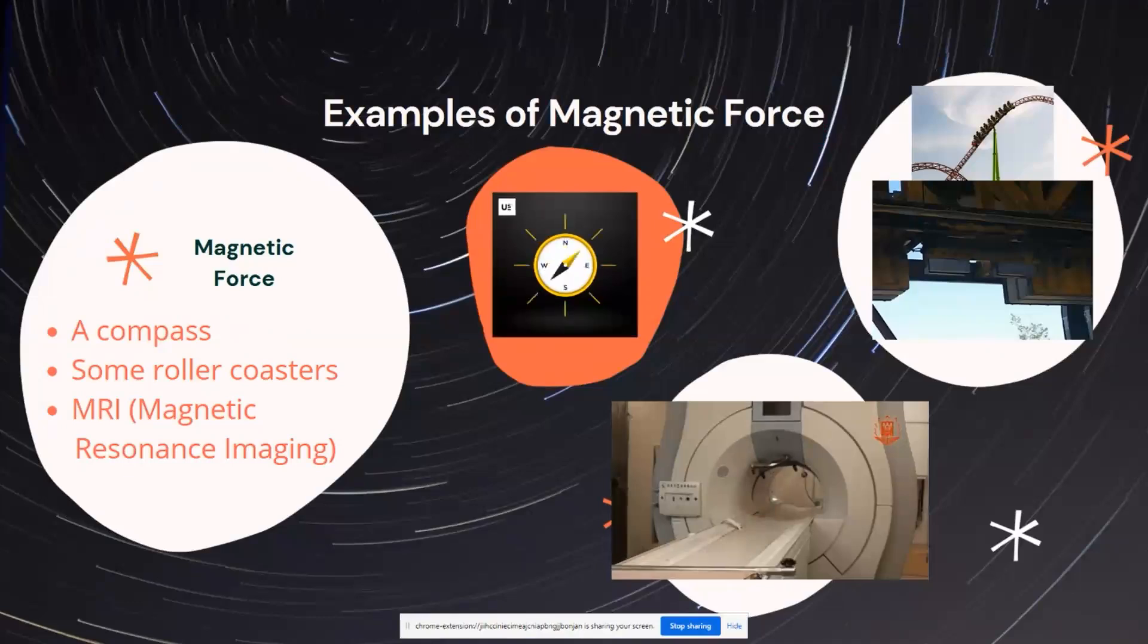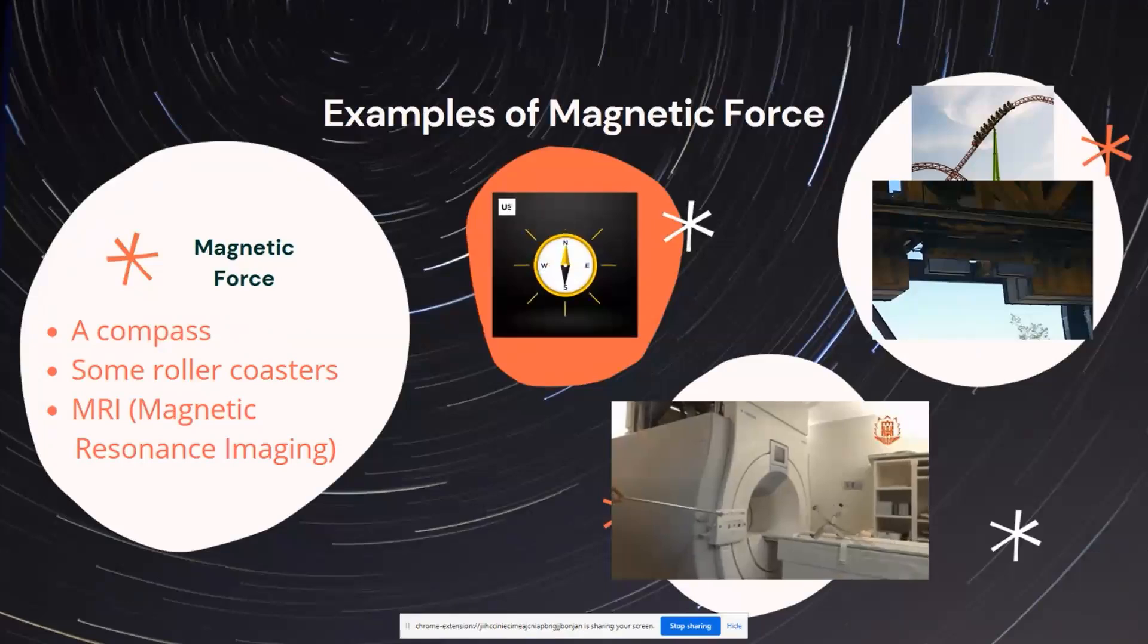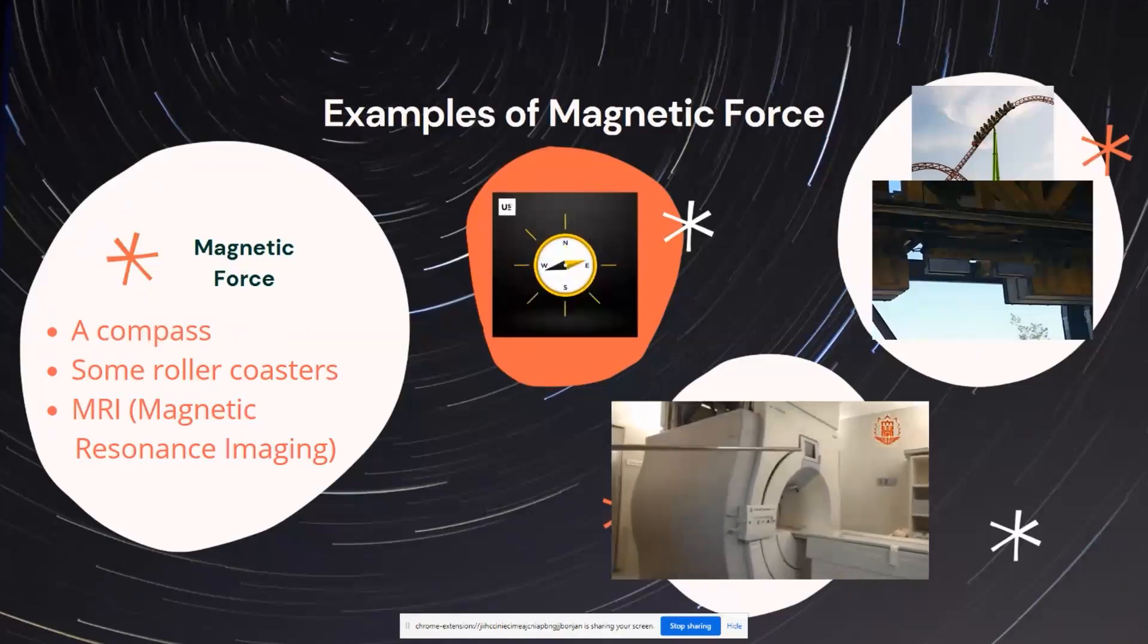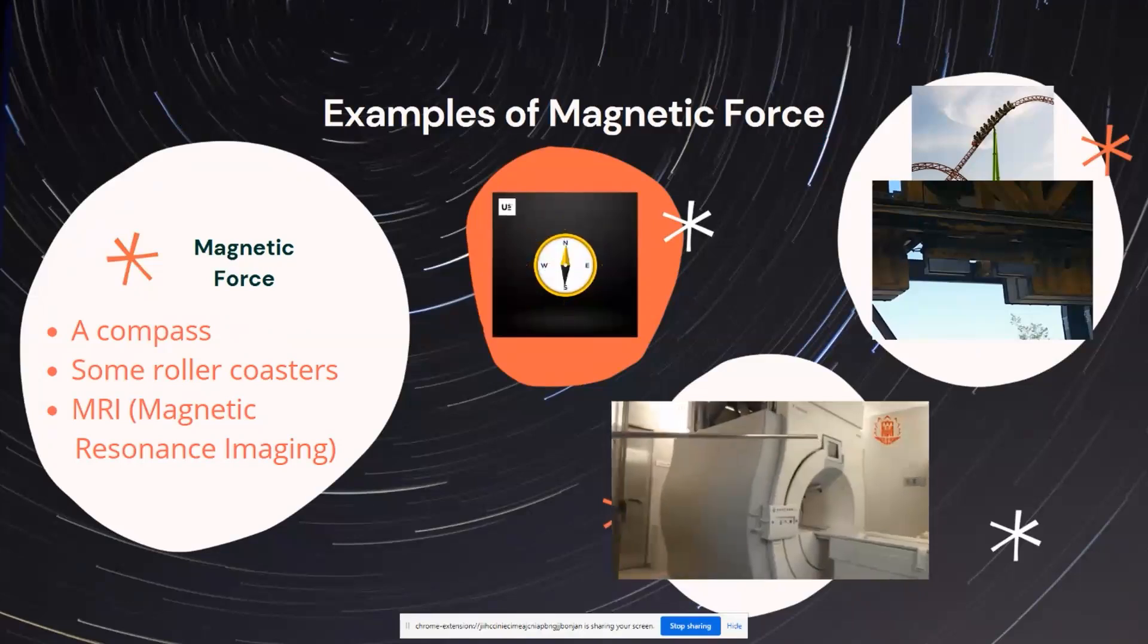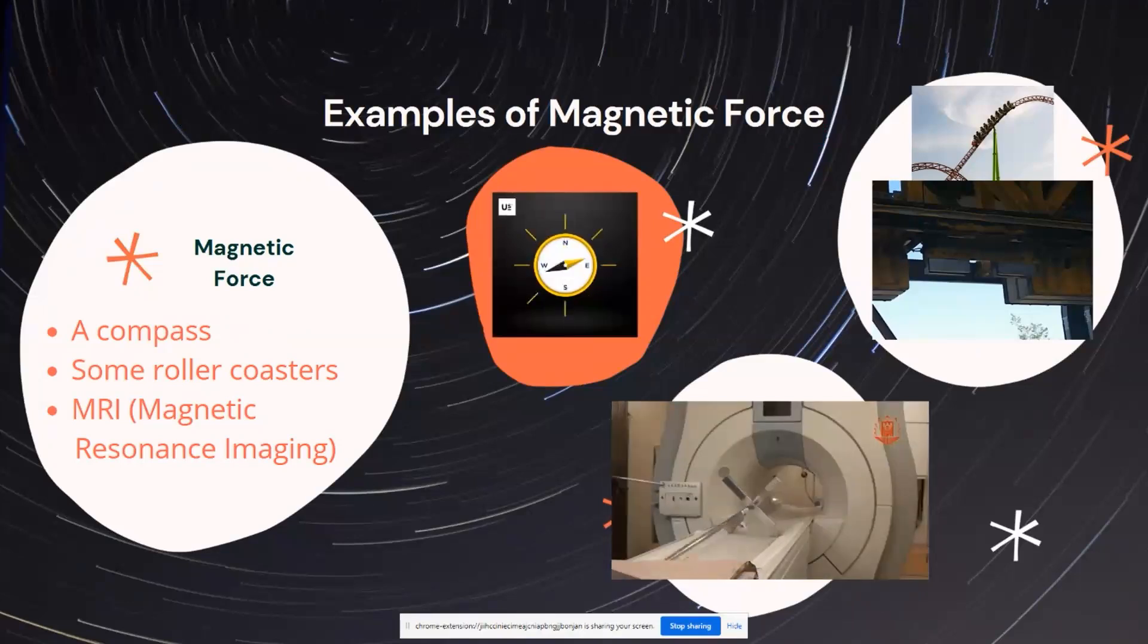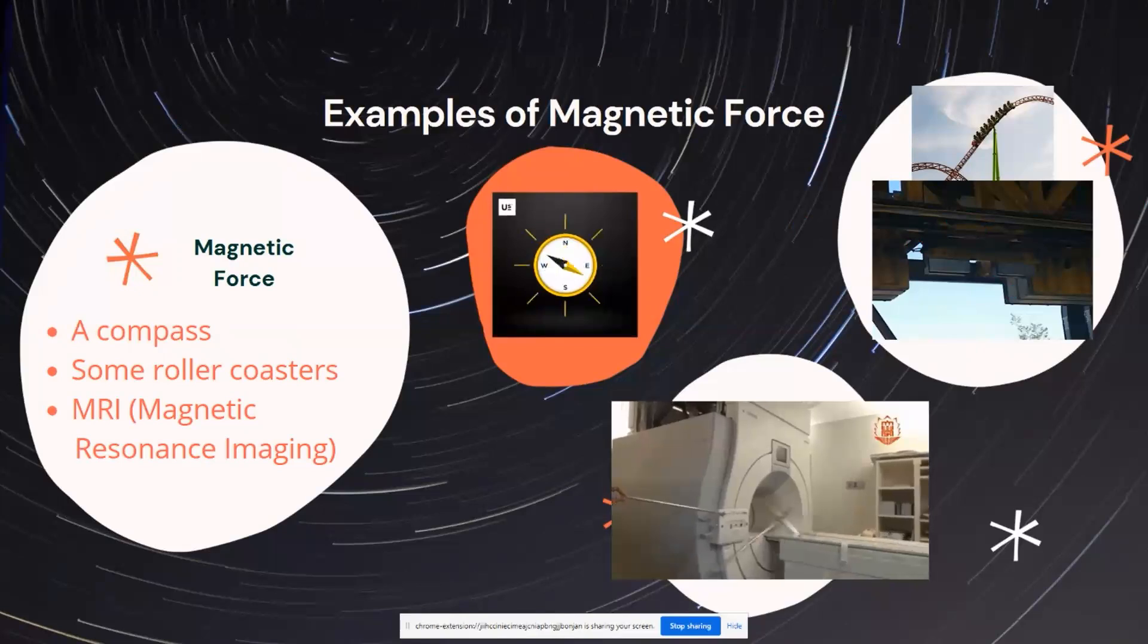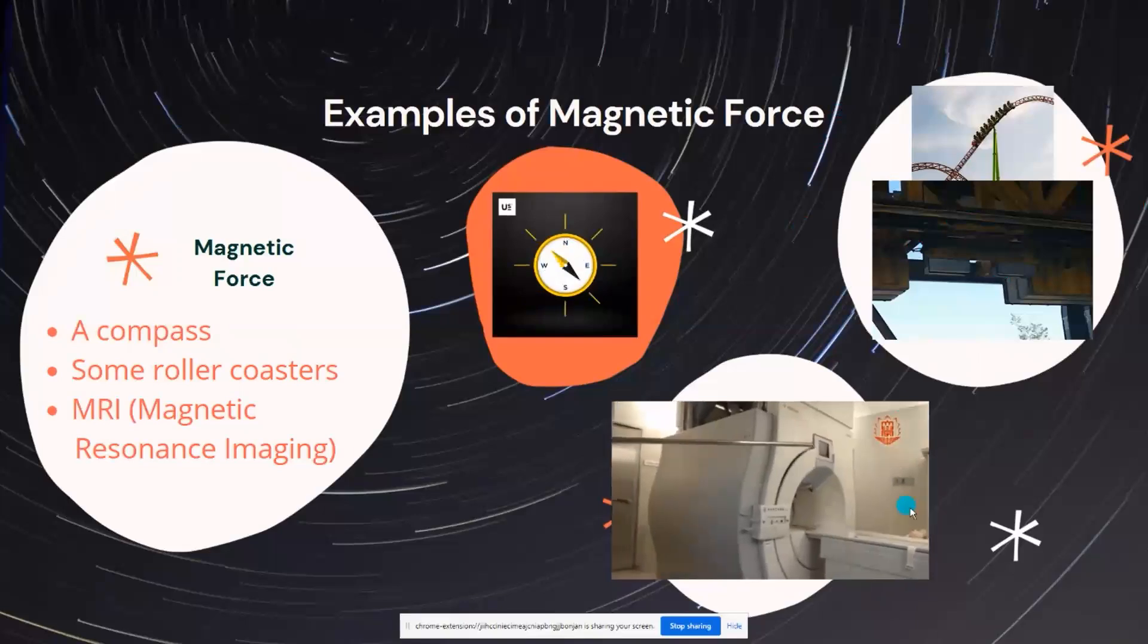And so at Six Flags in Great America, they have a roller coaster called V2. And it basically sends you forward up and then drops you back down and goes the other way. And here we can see some magnets that it actually uses on its roller coaster to help propel the roller coaster forward and backwards.